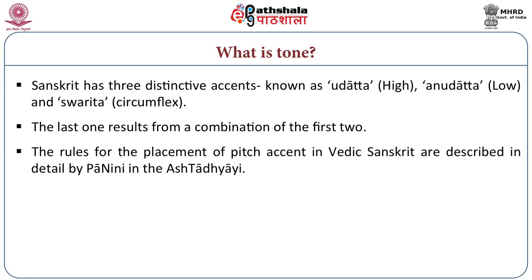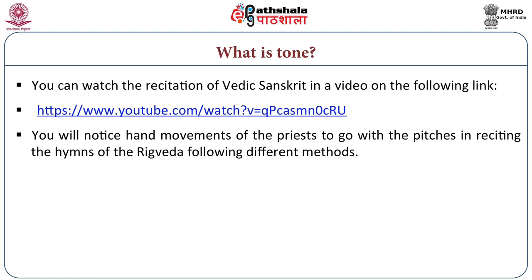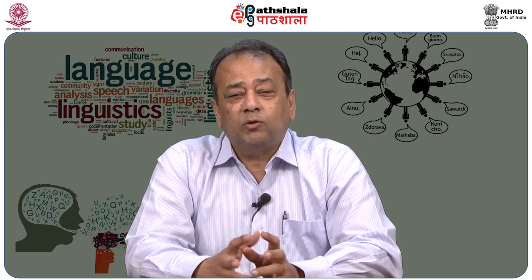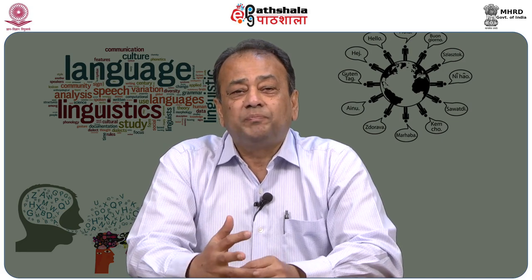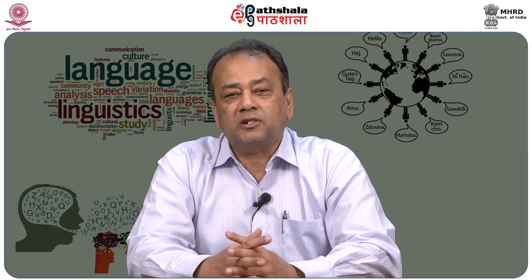Vedic Sanskrit had a very well-developed pitch-accent system. The grammarians, especially Panini, spoke about these pitch accents used in Vedic Sanskrit. The names given to the three different pitch accents were: Udatta, meaning high; Anudatta, meaning low; and Svarita, a circumflex, which is a combination of high and low. You can watch a video to see how Vedic Sanskrit was recited — the priests reciting the Vedic hymns actually move their hands up and down, accompanying the different pitch accents.